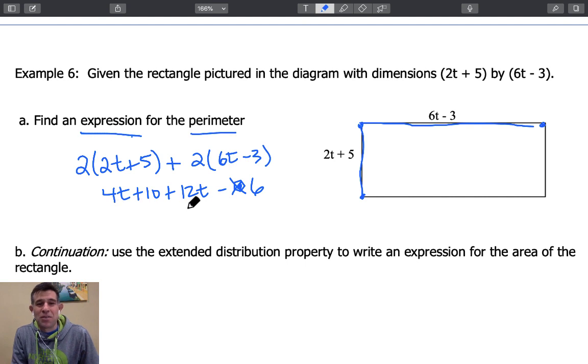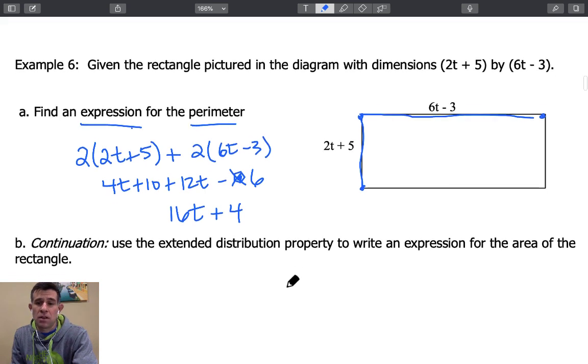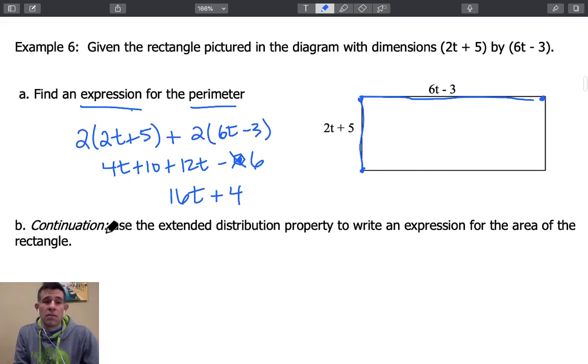We're going to combine our like terms. We've got 4t and 12t. That's going to give us 16t. 10 and a negative 6 gives us a positive 4. So here's an expression that represents the perimeter. Now using the extended distribution property write an expression for the area of the rectangle.